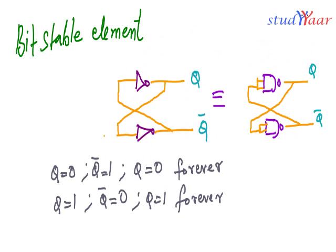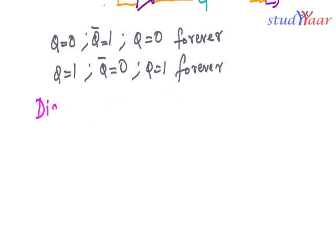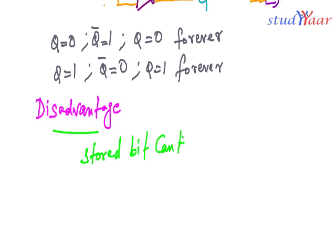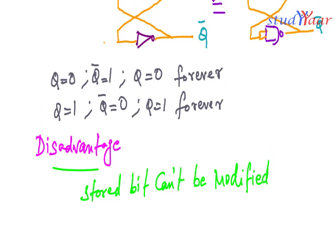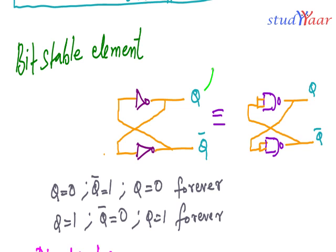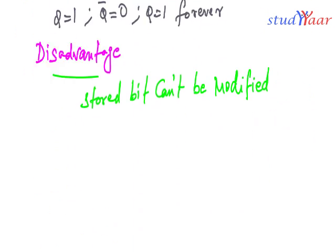The problem with the bit-stable element is you cannot decide what Q is, because Q is your output — you cannot change the bit which is stored. The disadvantage is the stored bit cannot be changed or modified. Once you have stored zero, it is going to be zero forever. You have no control on what your state is; it entirely depends on what Q is when the circuit is first switched on.